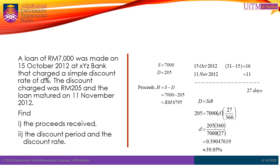We can find the proceeds by subtracting D from S, which gives us 7000 minus 205, and we have the answer to be 6795. Thus, the amount received, or the proceeds, is RM6795.